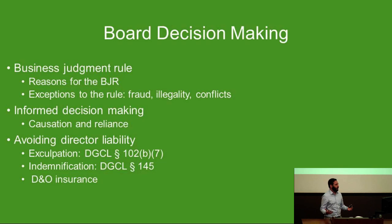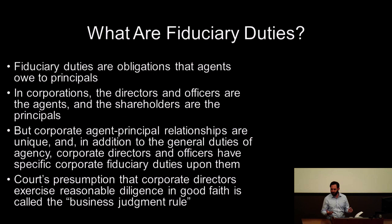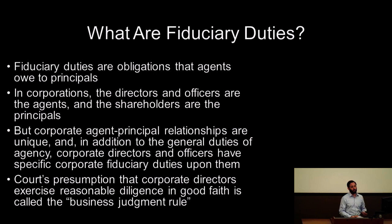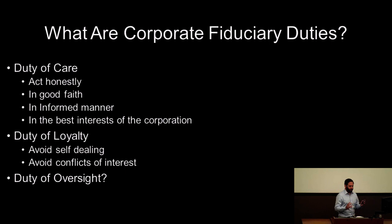Let's talk about board decision making. We have the business judgment rule among other concepts — talking briefly about the reasons for the BJR and its exceptions, the requirement for informed decision making as we saw in Smith v. Van Gorkum, as well as some ways to avoid liability. What are fiduciary duties? All agents owe fiduciary duties to their principals — it's a concept in agency law. But corporate agents — directors, officers — are unique, sui generis, and there's a special set of rules pertaining to the agency relationship between shareholders and the officers and directors of a corporation.